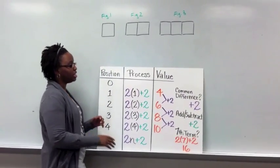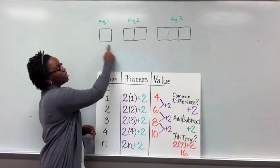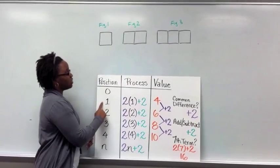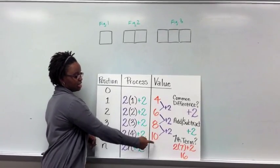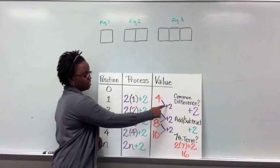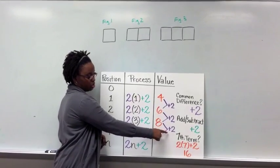Alright, on number 3, you were supposed to be looking at the value based on the perimeter of your figures. So the first figure had a perimeter of 4, the second one a 6, 8, and 10. And so obviously, our common difference here is every time we're adding 2.